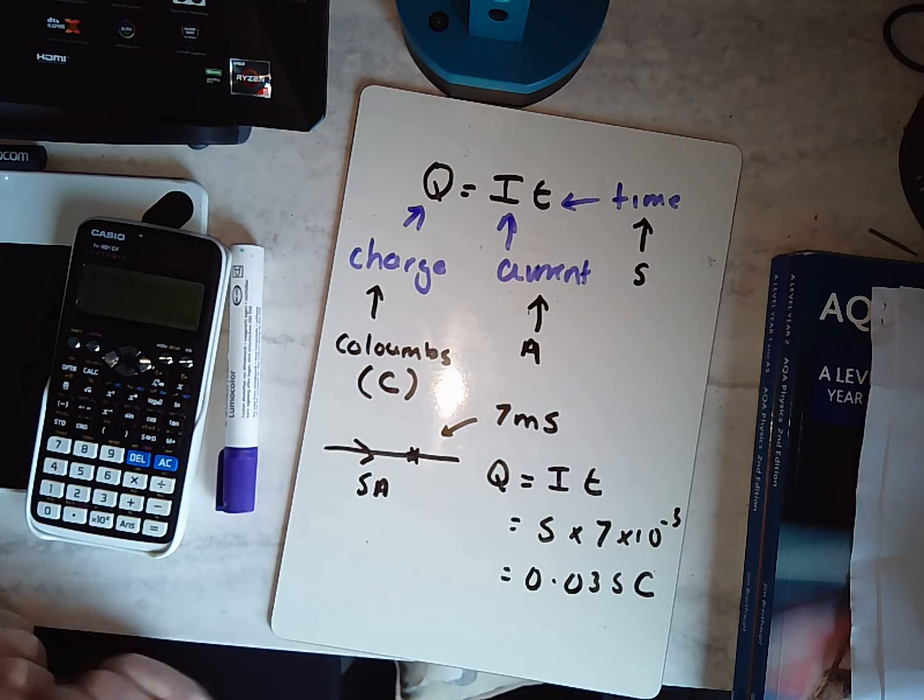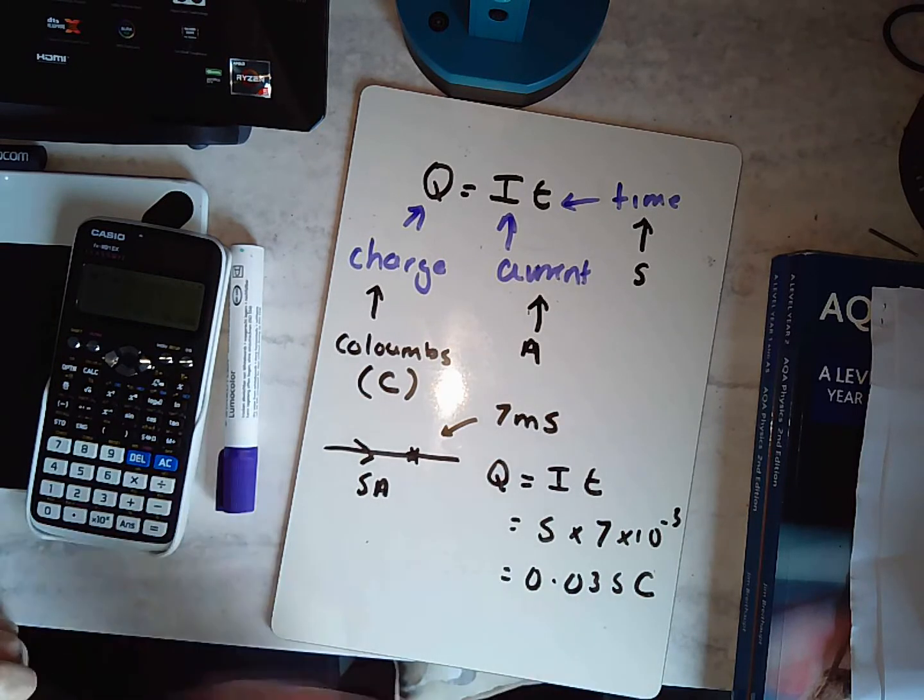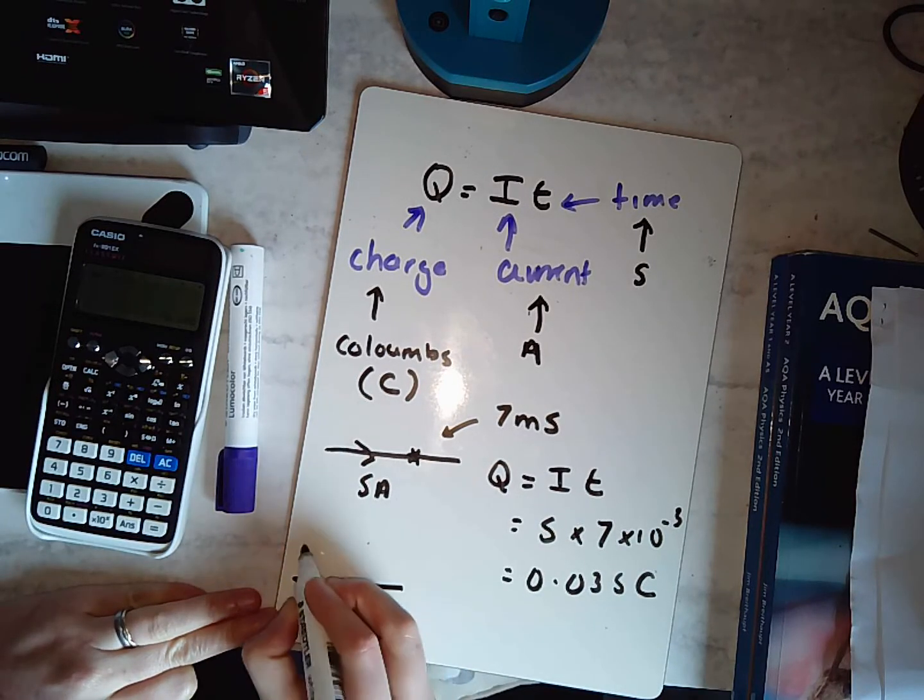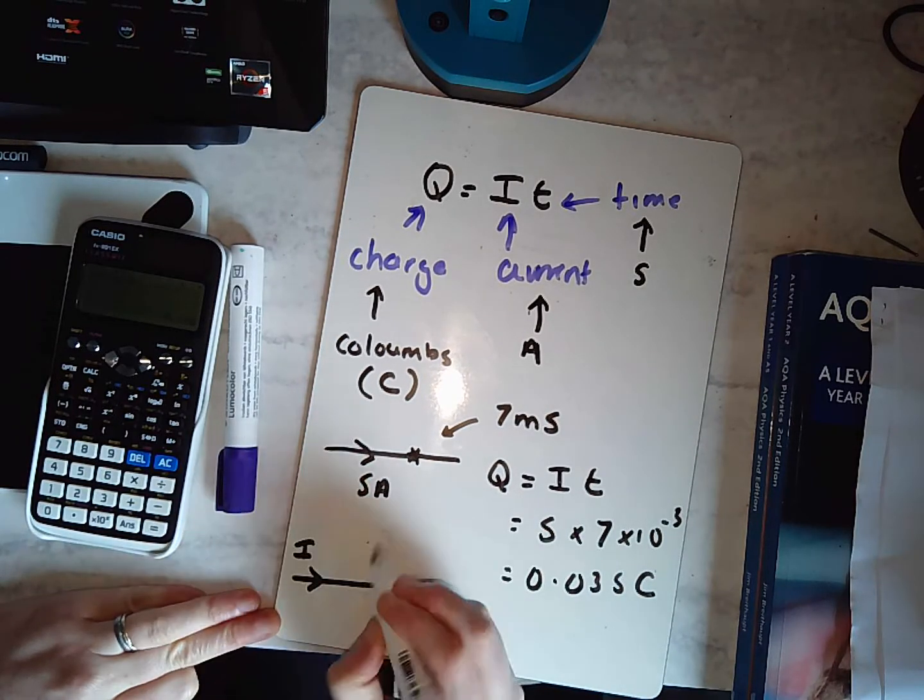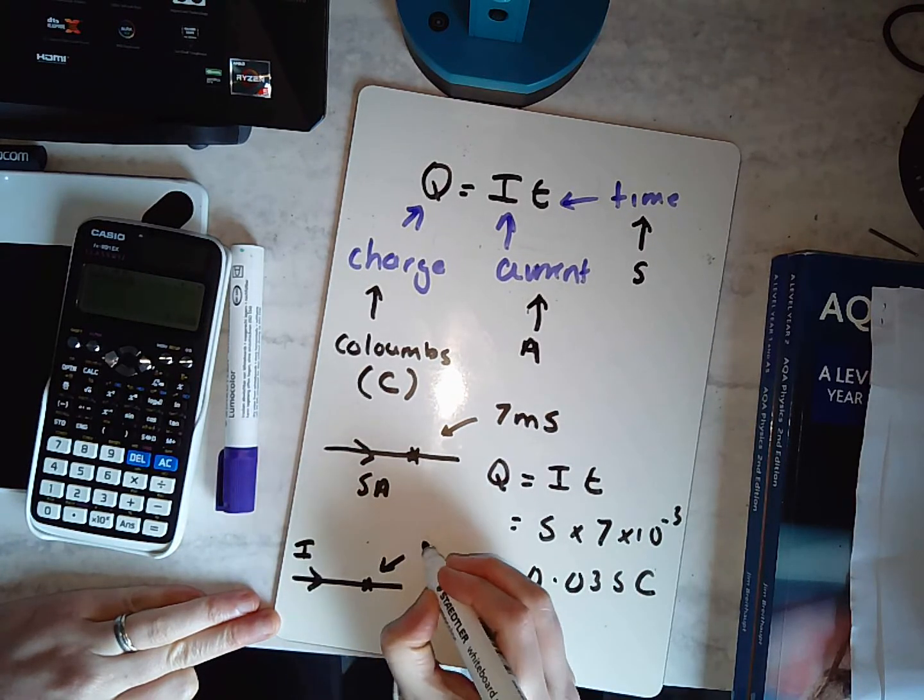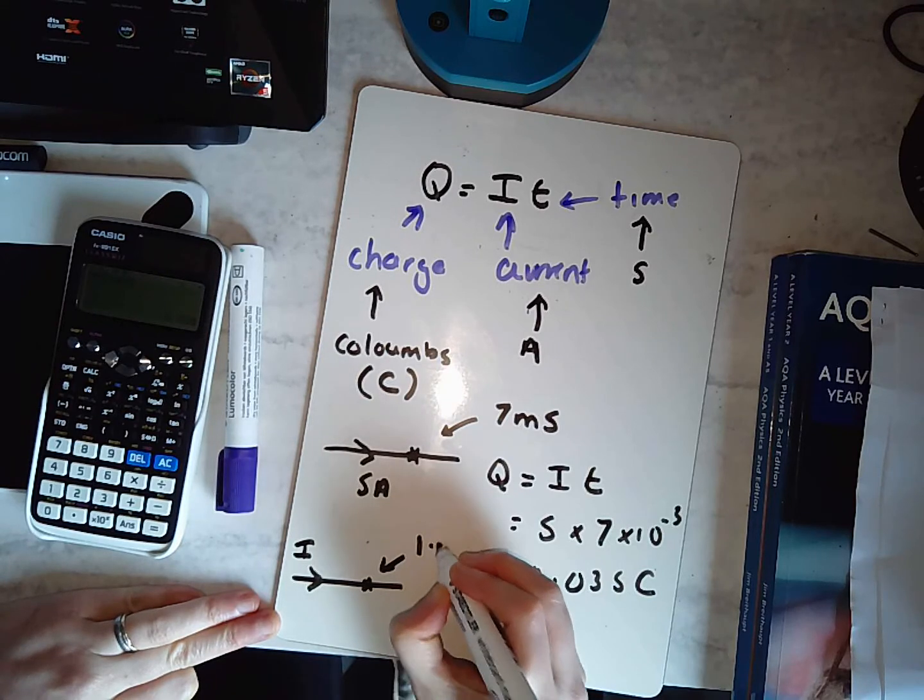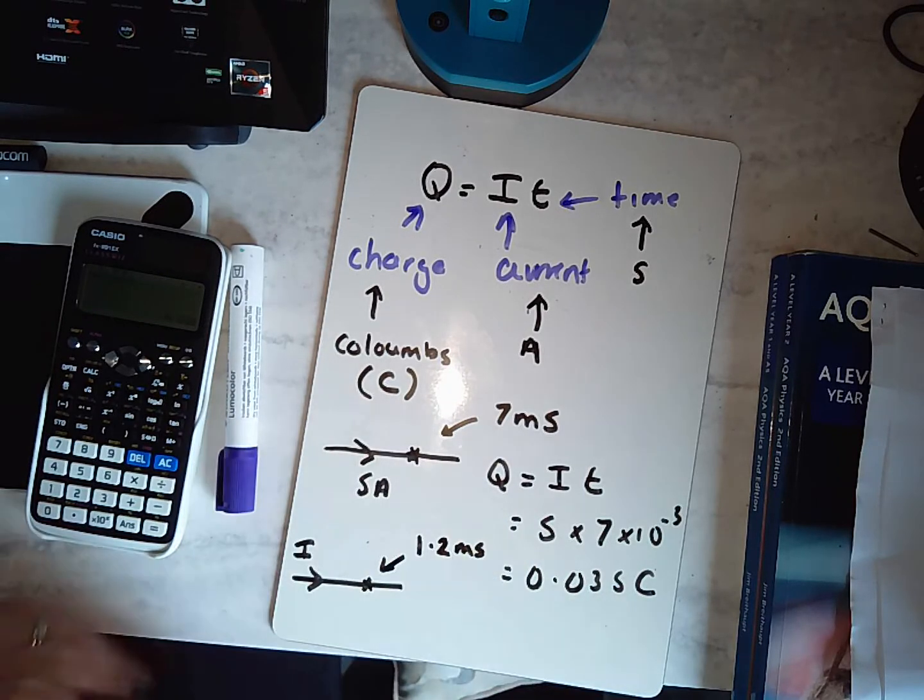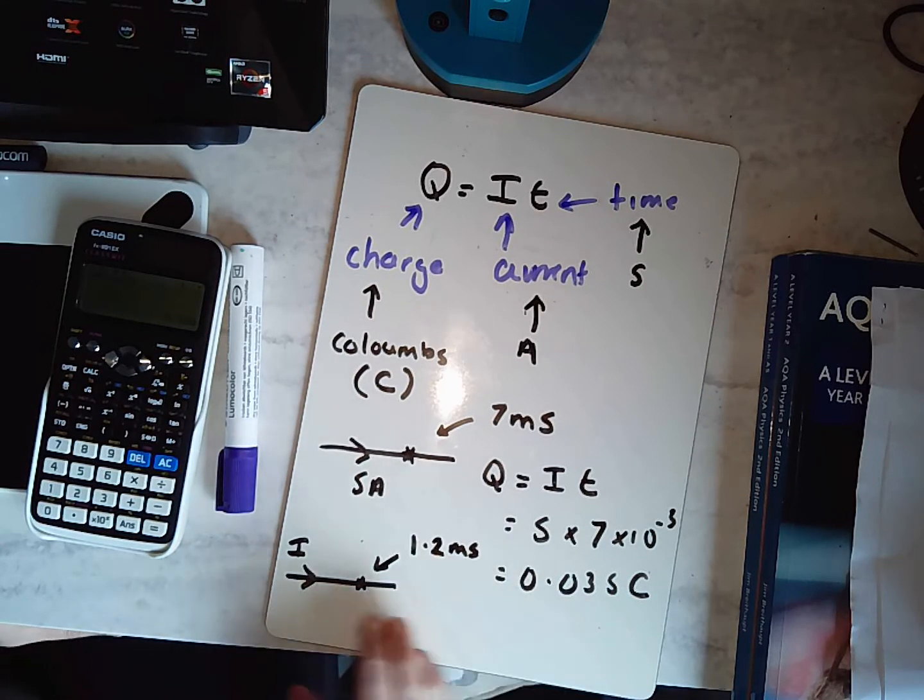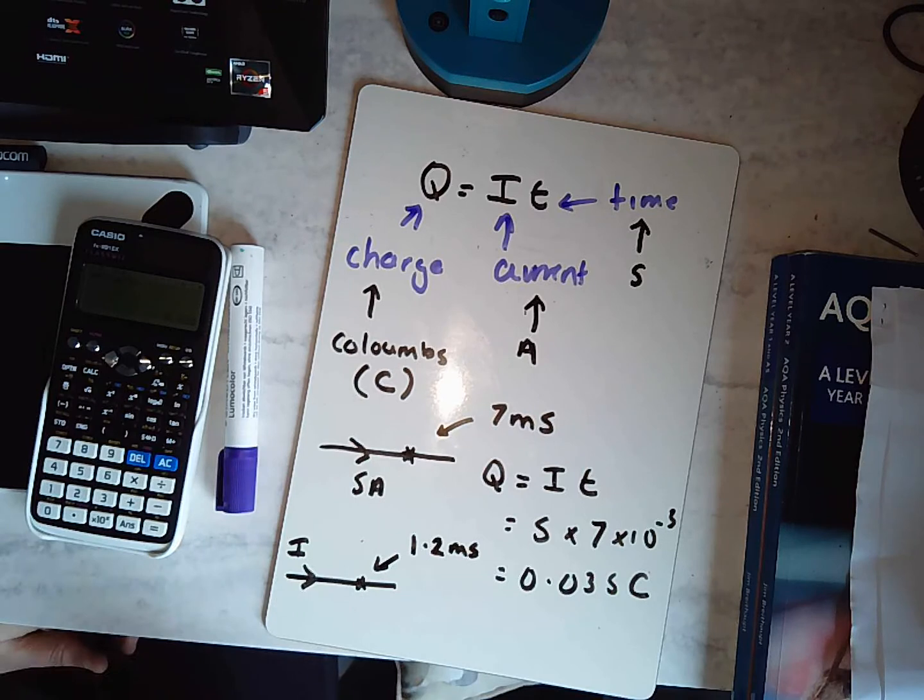Now here's another question for you. I want to have this same amount of charge, but I want to know what is the current going to have to be if I want that amount of charge to pass this point in 1.2 milliseconds. So I want to know what current I'm going to need to have the same amount of charge pass here in a much smaller time. Have a go.